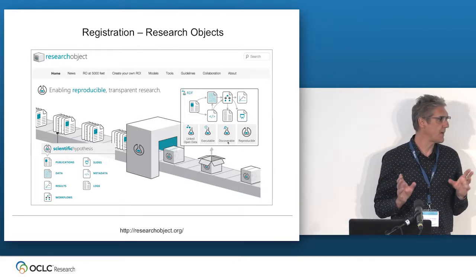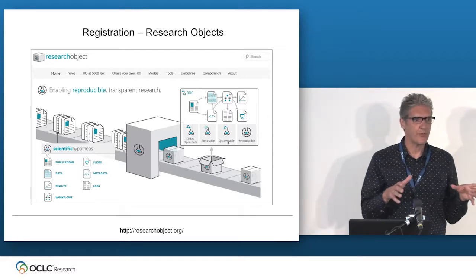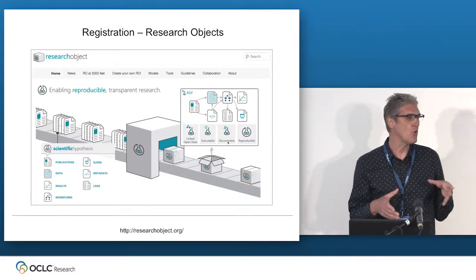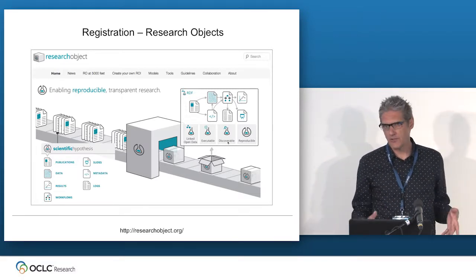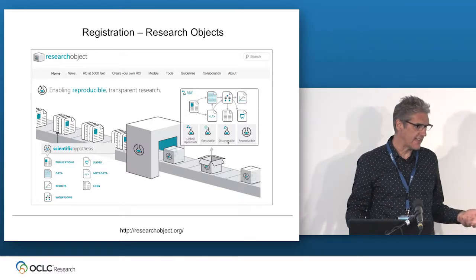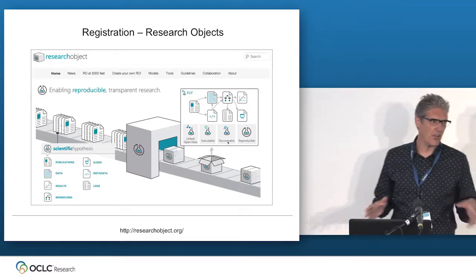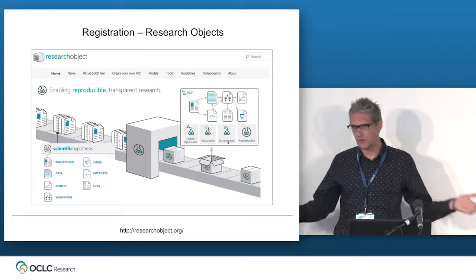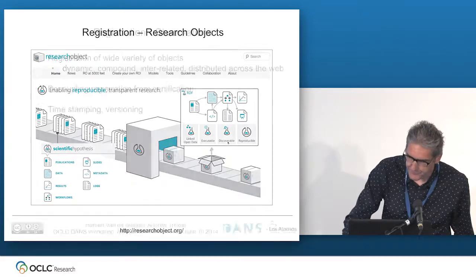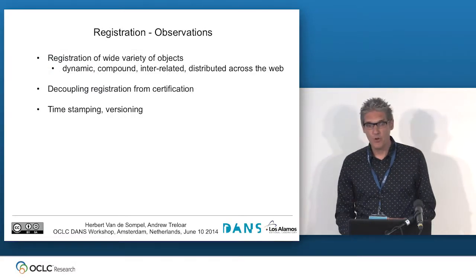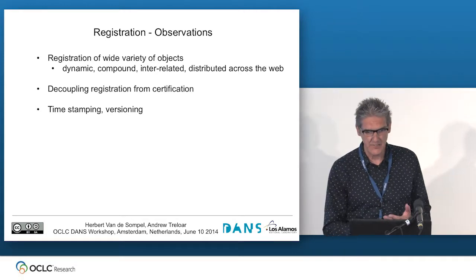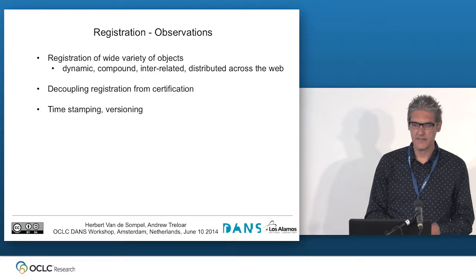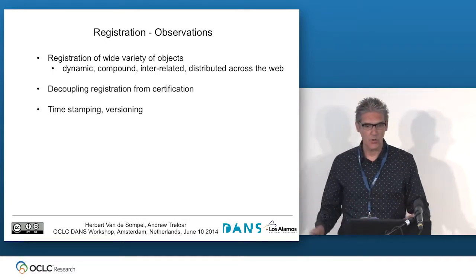Each of these things has identifiers on the web — HTTP URIs — all bundled together in a machine-actionable RDF description, with links describing the exact relationships between components. Keep this in mind as a metaphor for what we have to deal with in the future: not only is it all digital, not only is it compound, but it's also interlinked and it's all over the network. These things do not necessarily live on one platform — they are distributed all over the place.